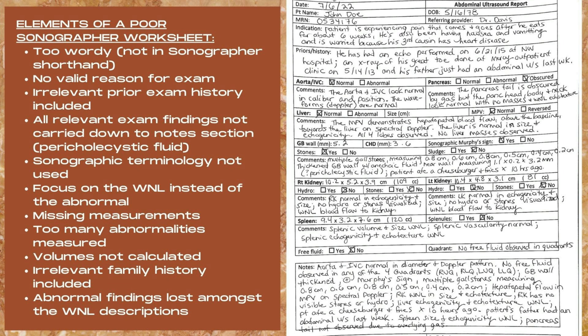The next section states: 'the main portal vein demonstrates hepatopetal blood flow above the baseline towards the liver on spectral Doppler; the liver is normal in size and echogenicity; all four lobes observed; no liver masses observed.' Note that all of this text is redundant. By checking the liver-is-normal box and the main-portal-vein-is-normal box, you've conveyed all of this same information in two checkmarks instead of a full paragraph.